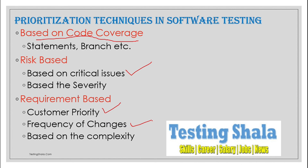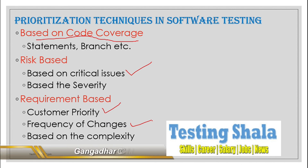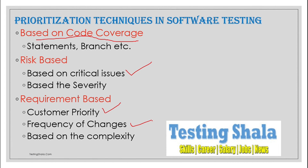Once developers implement those requirements, testers can then test them. So these are the three important prioritization techniques used in software testing: first, code coverage-based; second, risk-based; and third, requirement-based.